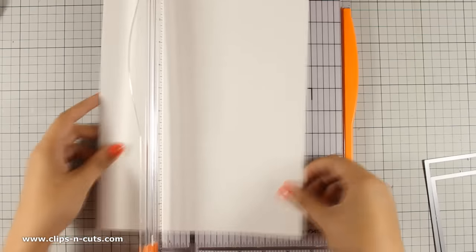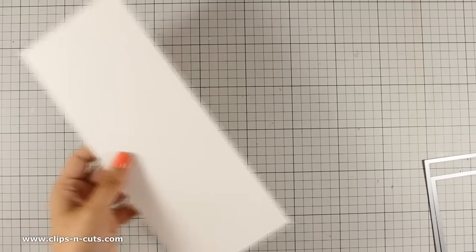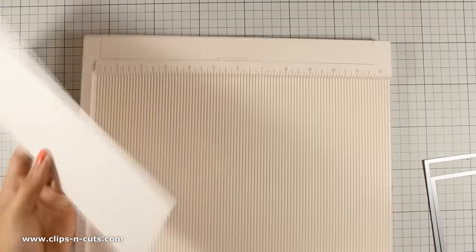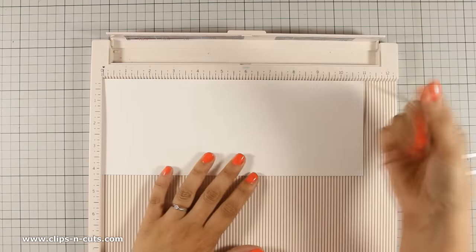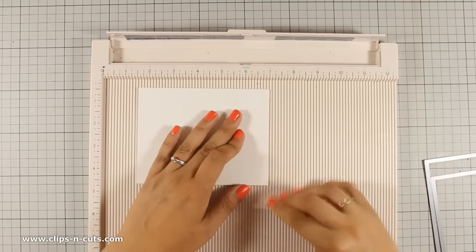First of all I am going to create my card base and the card base for today will be a top folding card that's 4.25x5.5. So I have cut out in half one of the white cardstocks that was included in the kit and now I am scoring it down to have my card base.